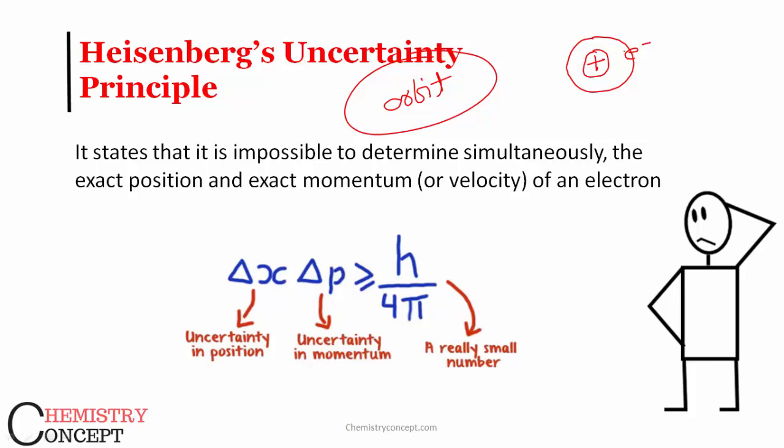Now, what is Bohr doing? He is giving us a formula using which we can find out the exact velocity, as well as the path is fixed, that means we are able to find out the exact position also.